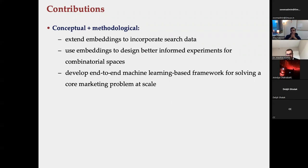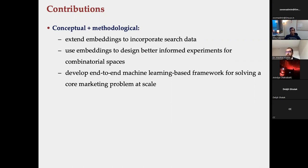We are the first to incorporate both consumer purchase and search data to learn complements and substitutes at scale. We can use those embeddings to design better-informed experiments in cases of large action spaces. Most experiments have one treatment option; here there are potentially billions of options. We take a smart subset of those bundles to explore the bundle space more efficiently. The paper is currently under review; once published, we'll make the code publicly accessible.